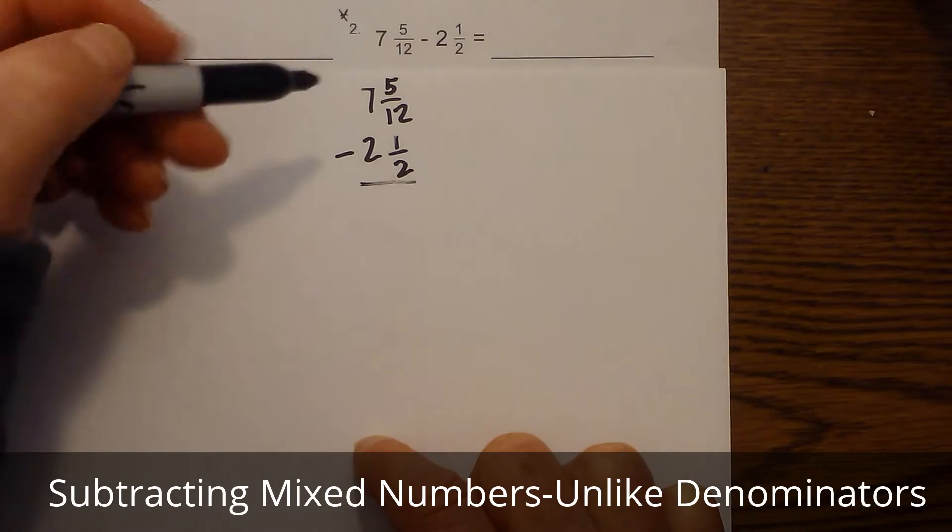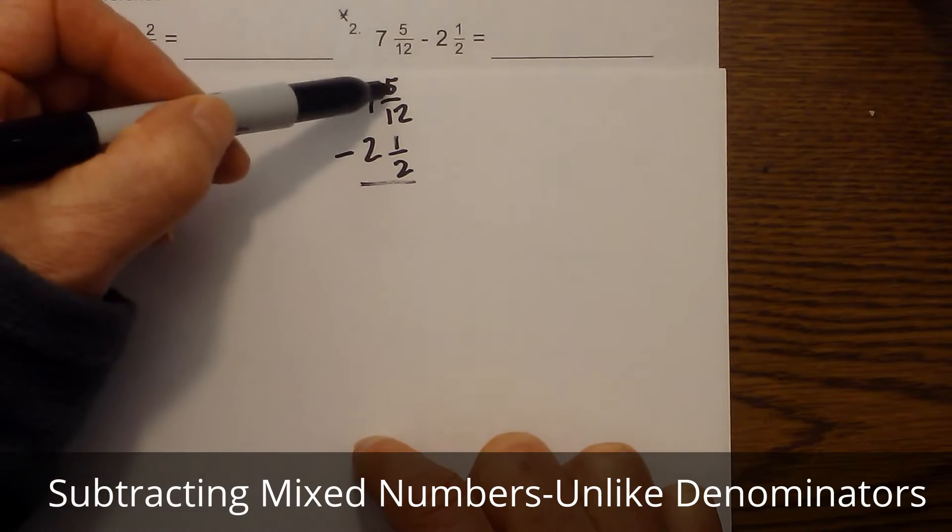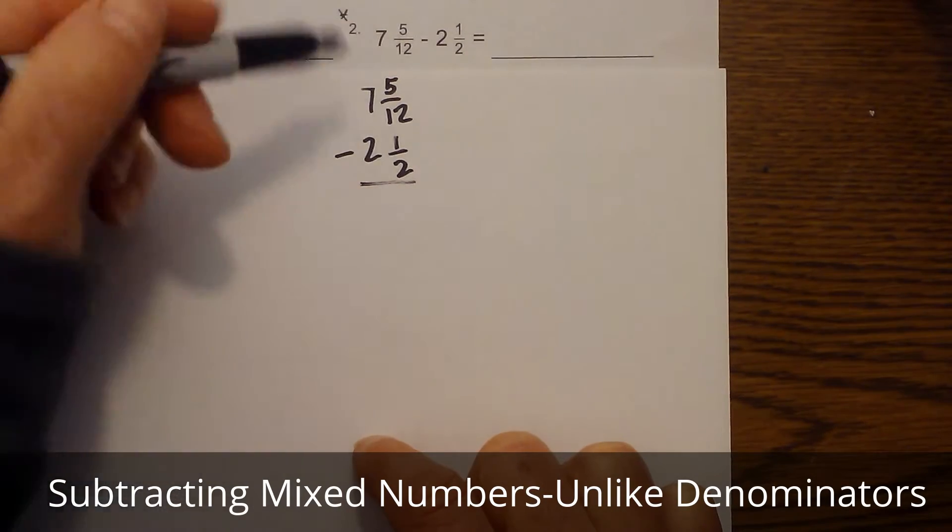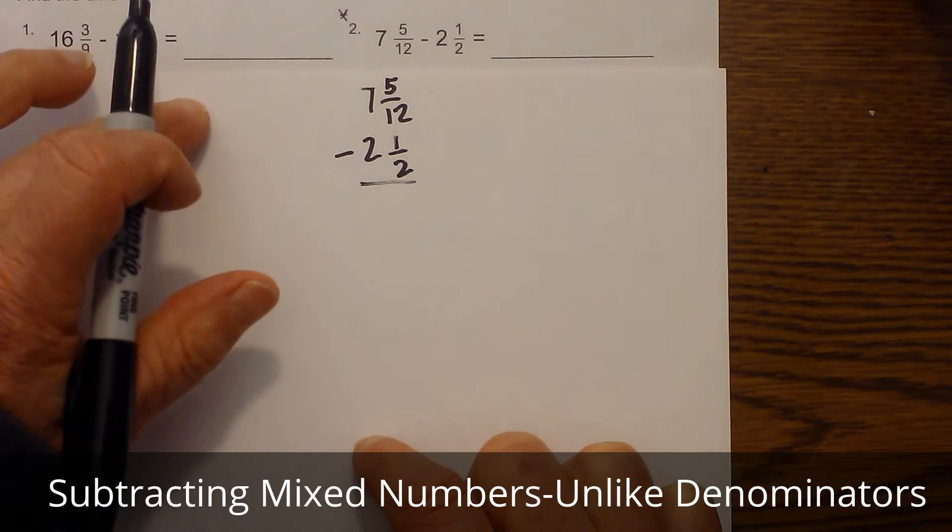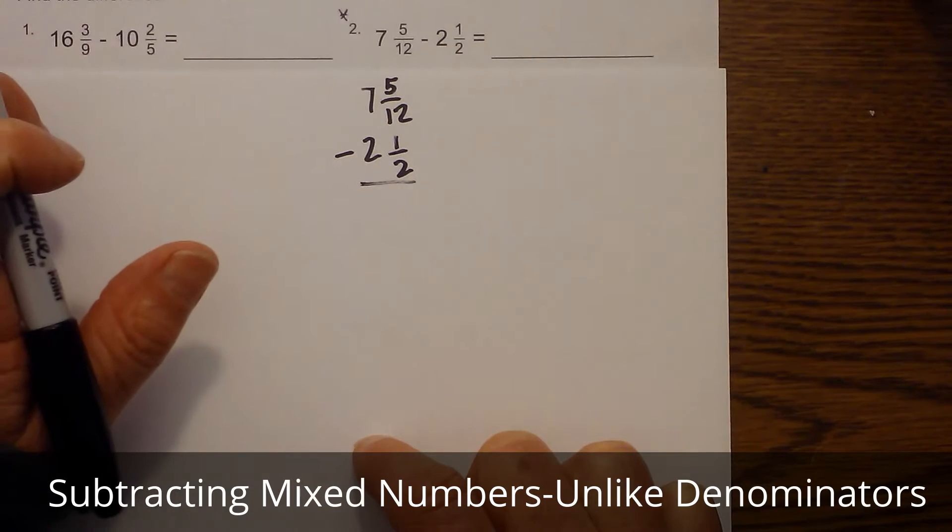So now I always begin when you have mixed numbers by subtracting the fractions, but we have a problem here because we have unlike denominators. So we need to find a common denominator.